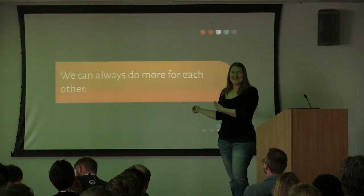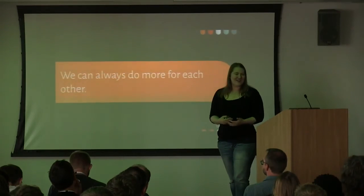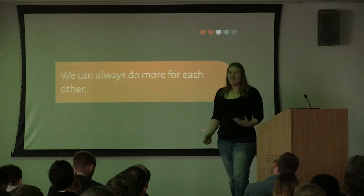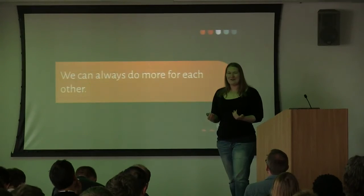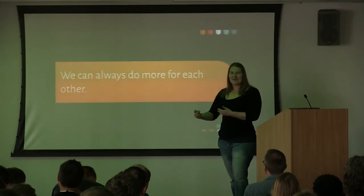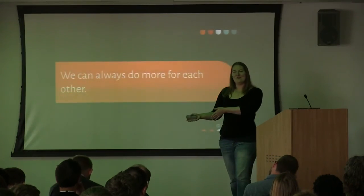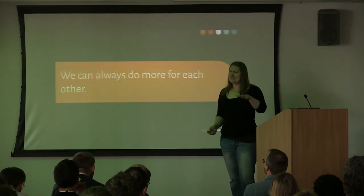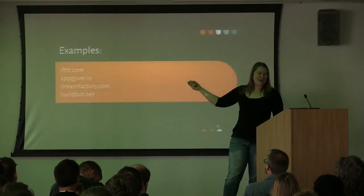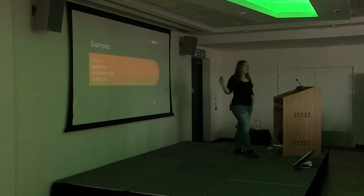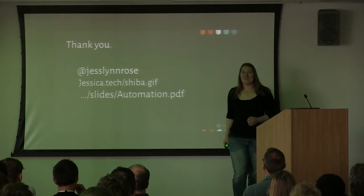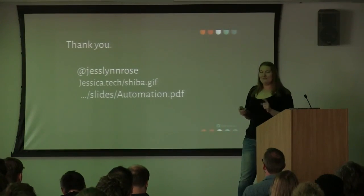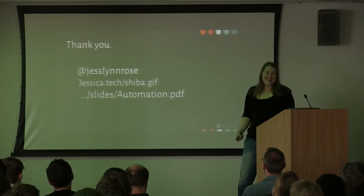That's miserable, but there are always more and more places where we can help support people, help people get more done, and ease the transition. If you know somebody with a tiny project, go ahead and see if you can give some advice. All of my talks are 'everything is terrible, here's how to make things less terrible' — automation is fantastic, but everything is terrible, but here's how to make things less terrible. The examples I've used are IFTTT, AppGyver, DreamFactory, and BuildBot — go ahead and check them out. And this is the best GIF on the internet. If you don't believe that, you can fight me on the internet at Jesslyn Rose. Thank you all so much.